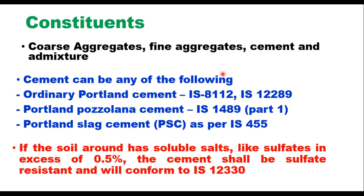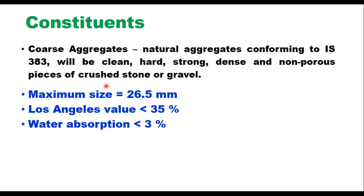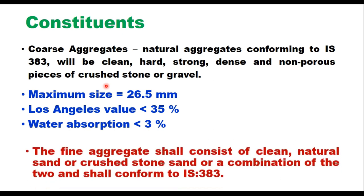The cement should be tested as per IS 12330. The coarse aggregate will be natural aggregates conforming to IS 383, and these aggregates should be clean, hard, strong, dense, and non-porous pieces of crushed stone or gravel. The maximum size of aggregate specified for DLC is 26.5 millimeters. It should be tested for physical characteristics: Los Angeles abrasion value should not be more than 35 percent, water absorption value should not be more than 3 percent, and impact value and flakiness index value can also be estimated.